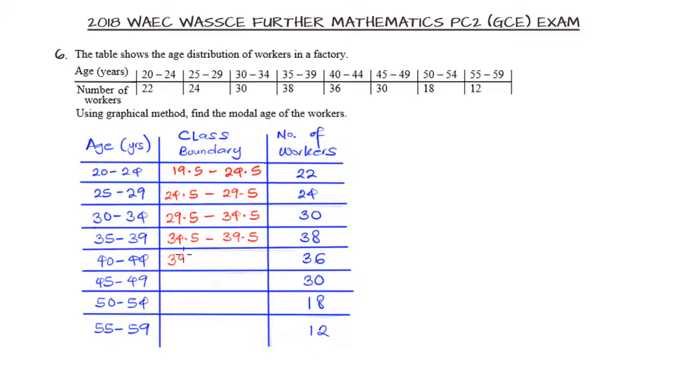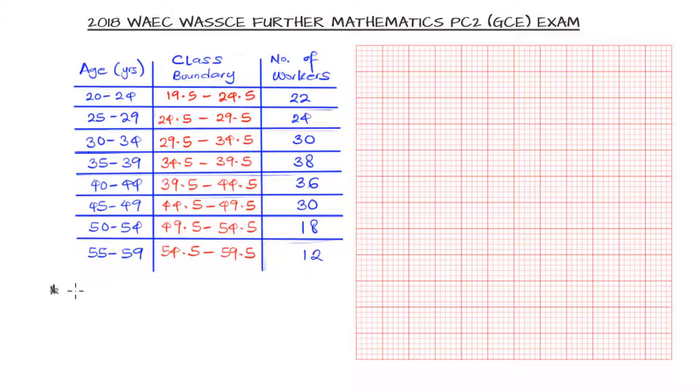So here we have 39.5 to 44.5, then 44.5 to 49.5, then 49.5 to 54.5, and finally 54.5 to 59.5. We are going to plot the histogram by making use of the class boundary against the number of workers that we are given.